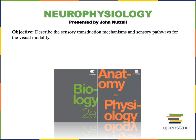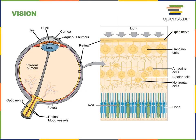In this video I will describe the sensory transduction mechanisms and sensory pathways for the visual modality. Vision is the ability to detect light patterns from the outside environment and interpret them into images. Light is detected by photoreceptor cells in the retina of the eye.